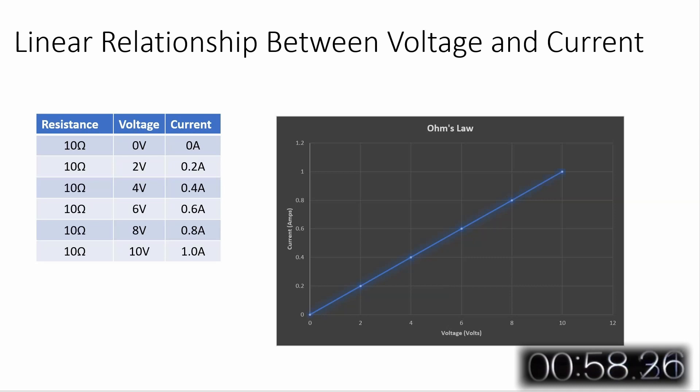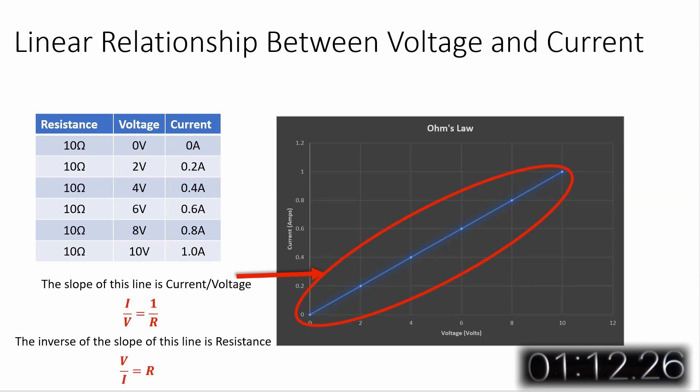At every step of the way, except when V equals zero, the voltage divided by the current is 10 ohms. The slope of the curve generated also indicates the resistance. The slope of the line is the inverse of resistance, which is called conductance. And so the inverse of the slope of the line generated is the resistance.